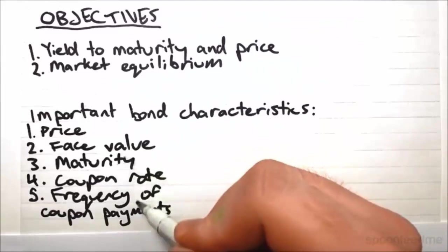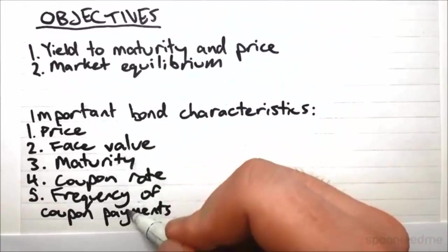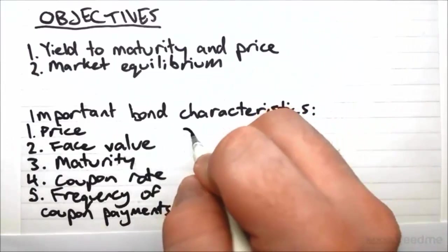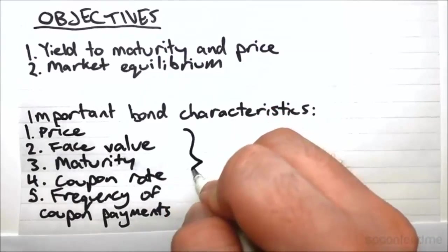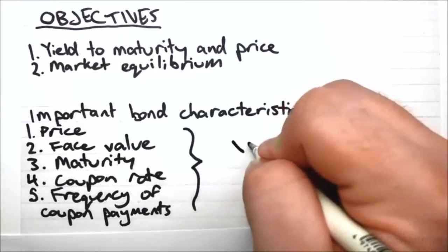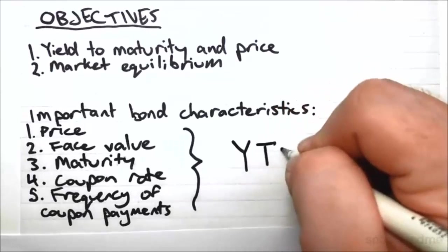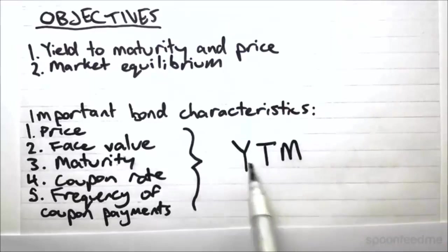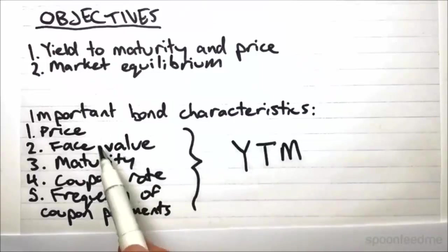So these things actually determine our yield to maturity. So think of them as inputs and we can use an equation and get a yield to maturity as an output, which gives us a single number that we can use to determine how profitable a bond is. So as I've just said, it comes from these five things.